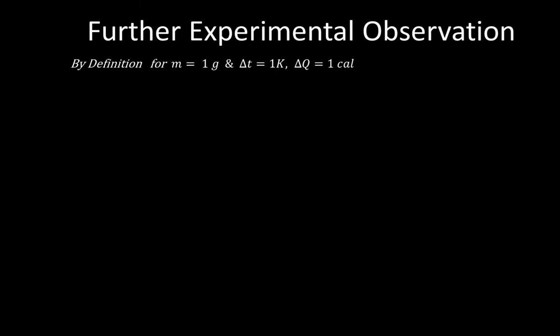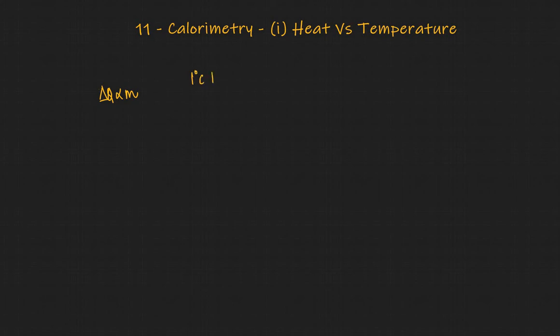From experiment, we know that by definition for one gram of water, if we raise the temperature by one Kelvin, delta Q is one calorie. For two grams of water you need to burn twice as much, so delta Q is two times more. For three grams, three times more — and so on. This means delta Q is proportional to mass M. For one degree Celsius rise with one gram you need one calorie; with two grams, two calories — that's what delta Q proportional to M means.